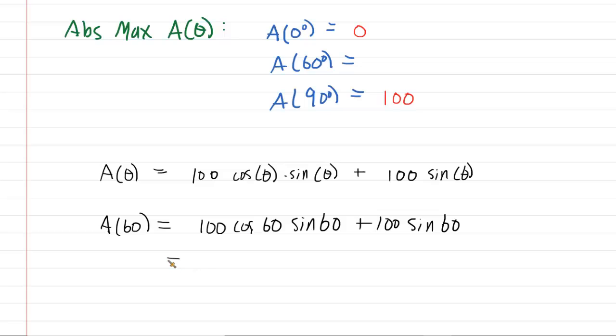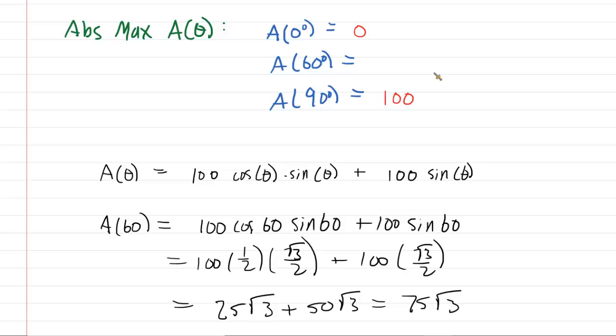If we simplify the first term, you're going to have 25√3 plus 50√3. So you get 75√3. When the angle is 60 degrees, the area of that trapezoidal gutter becomes 75√3. On a calculator, 75√3 is about 130, which is definitely greater than 100. So that means 60 degrees will be the angle that yields the maximum area.